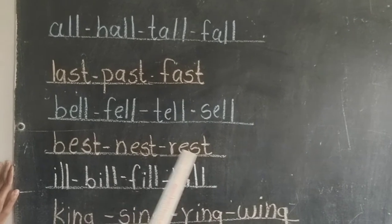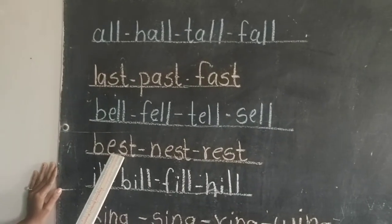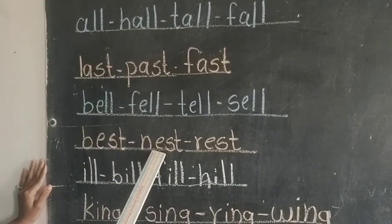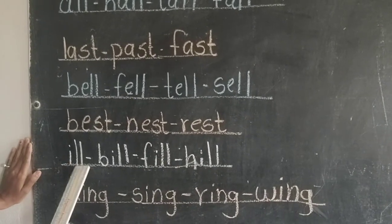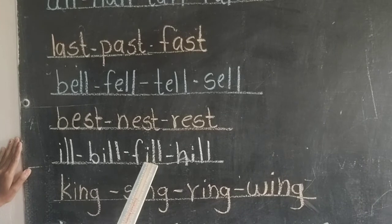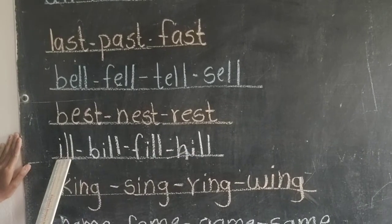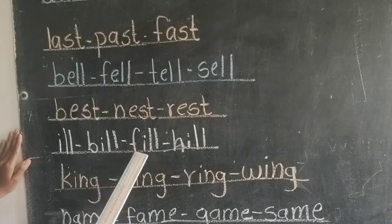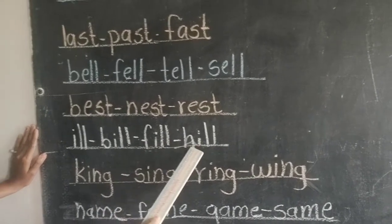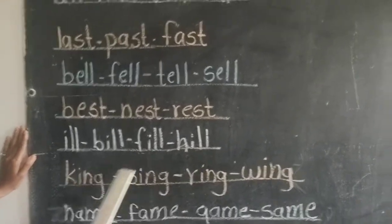Best, nest, rest. B-E-S-T best, N-E-S-T nest, R-E-S-T rest. Ill, bill, fill, hill. I-double-L ill, B-I-double-L bill, F-I-double-L fill, H-I-double-L hill.